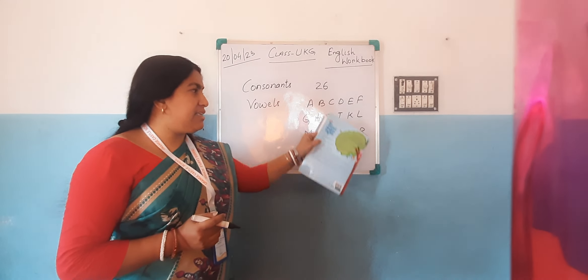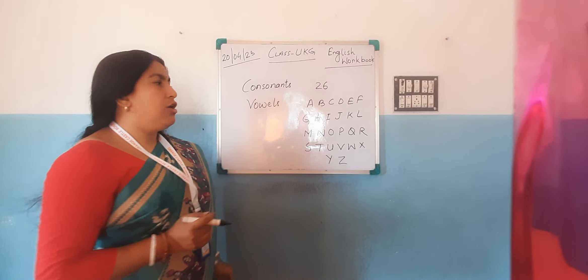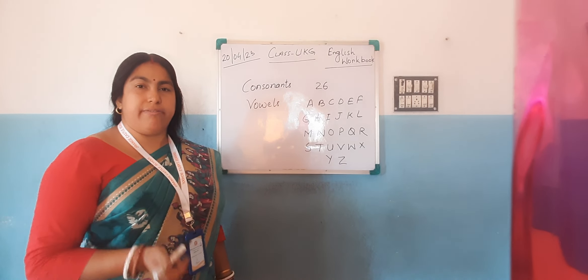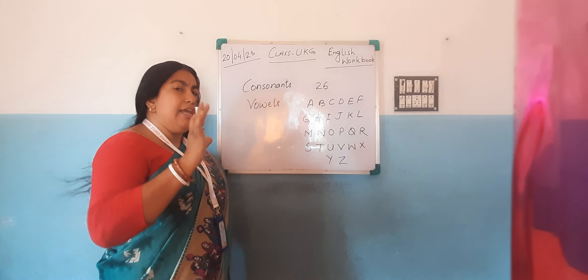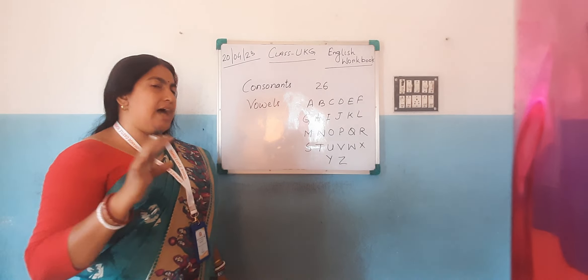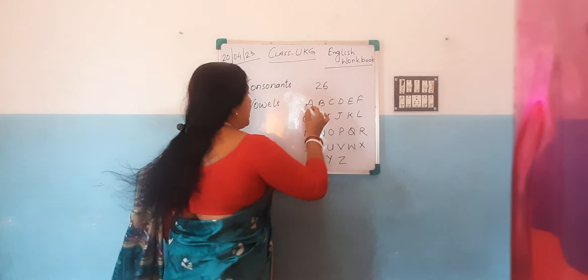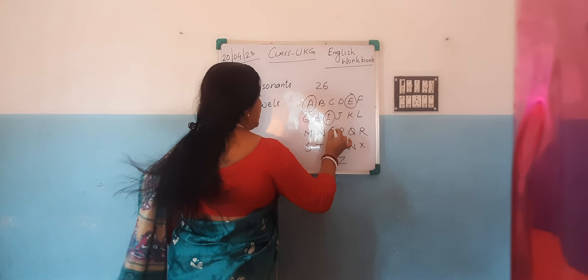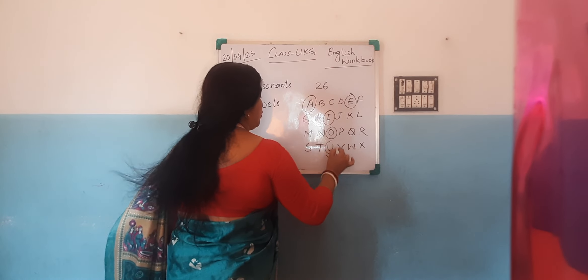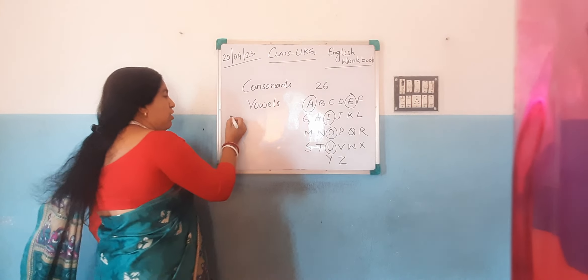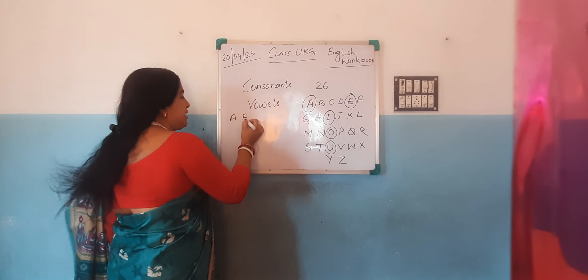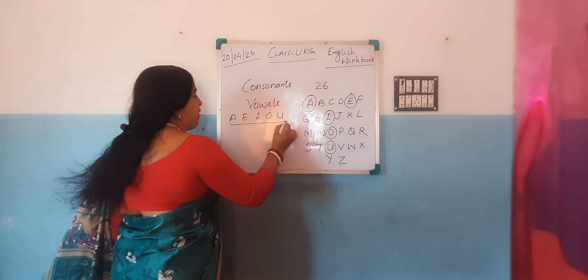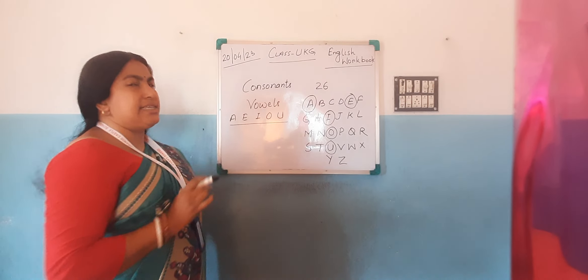But out of these 26 letters, only 5 alphabets or letters are vowels. Only 5 letters or alphabets are vowels. That is A, E, I, O, U. So A, E, I, O, U — these 5 alphabets are known as vowels.